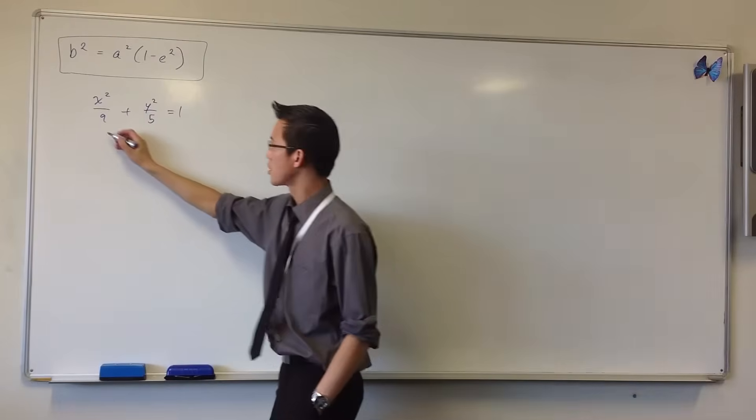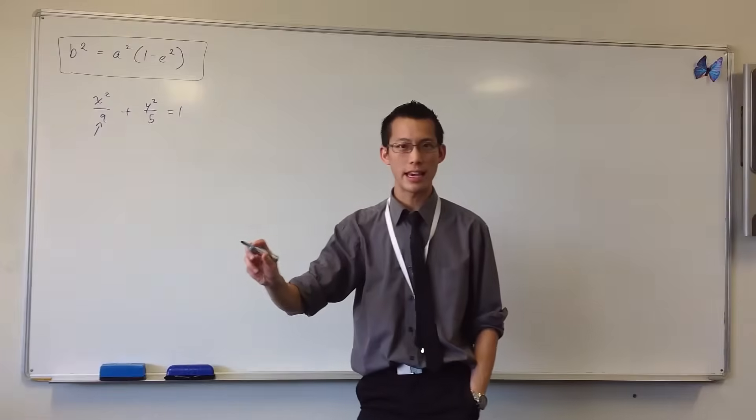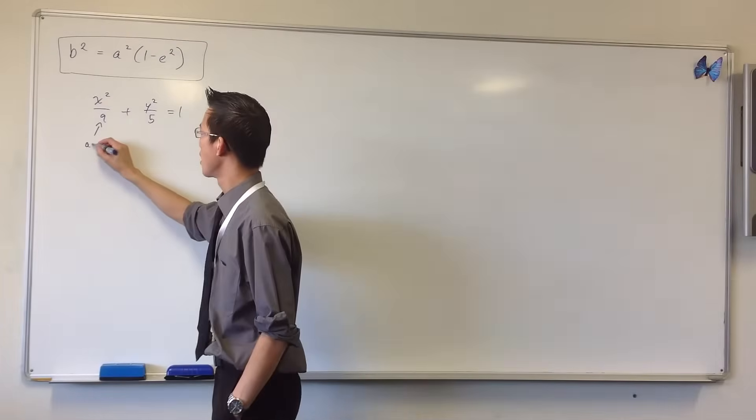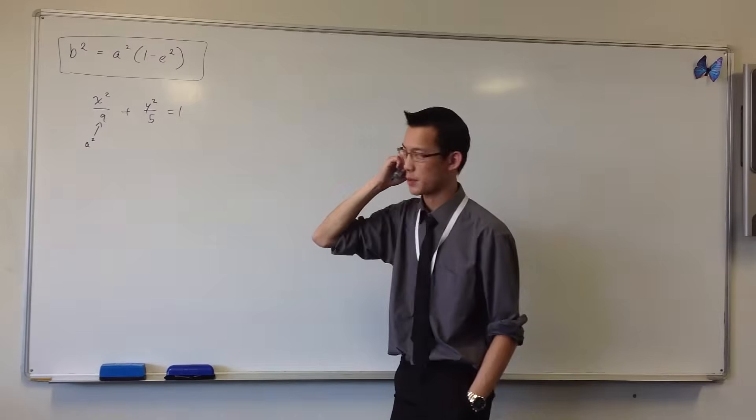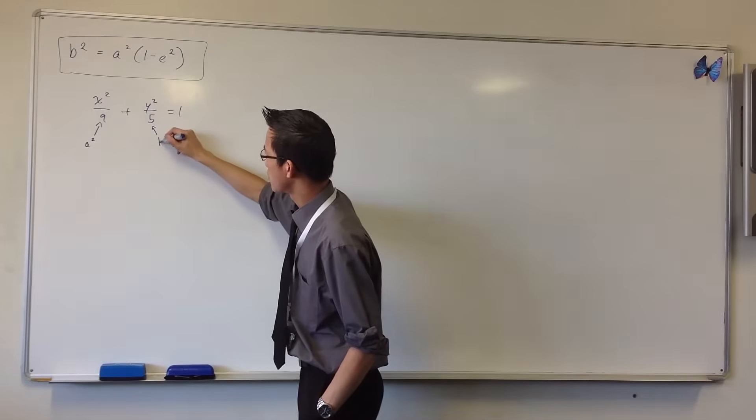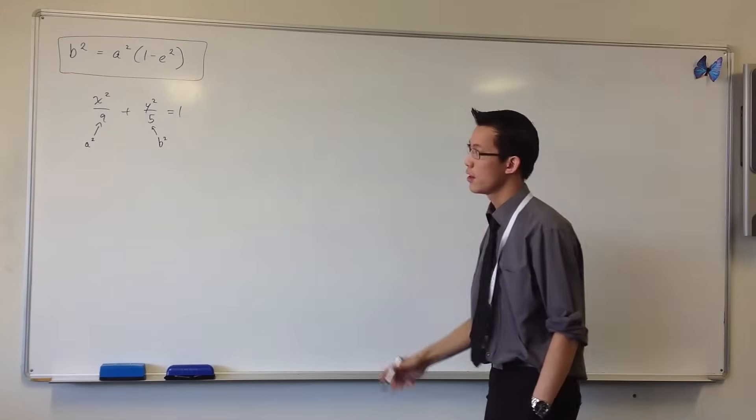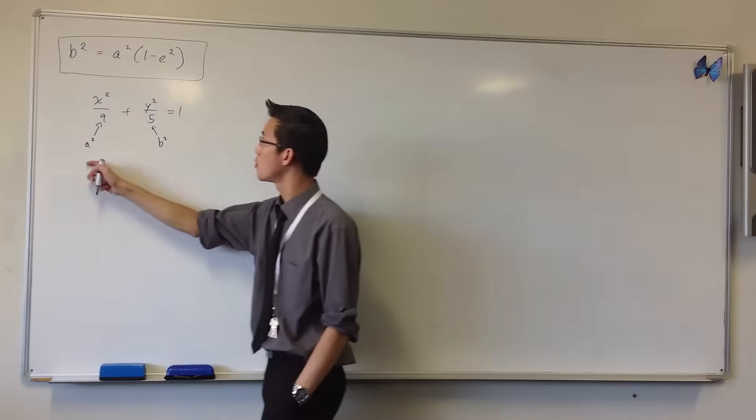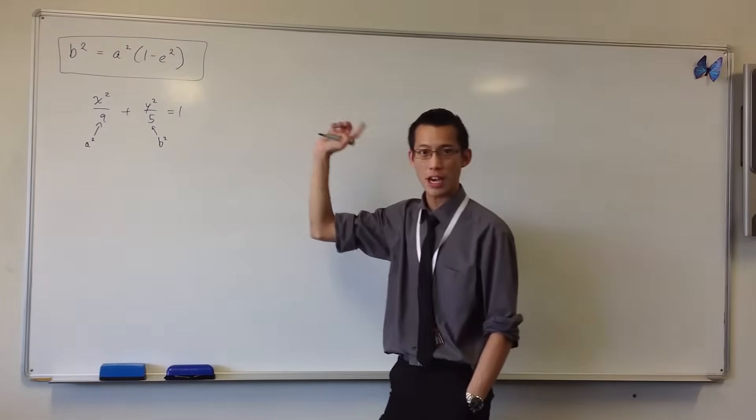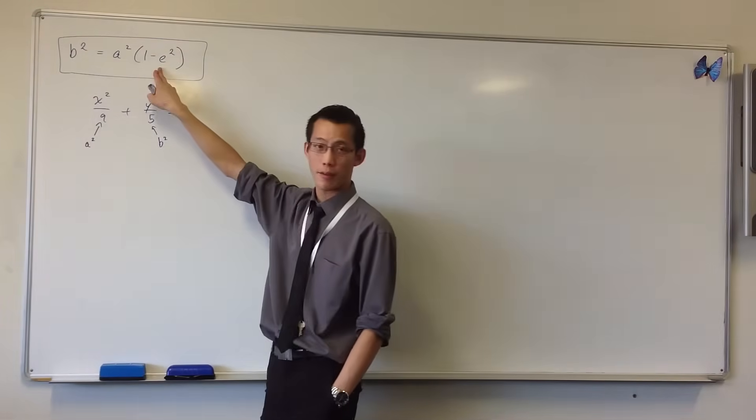You can see this is the larger length here, so this is going to be the semi-major axis squared. This is going to be the semi-minor axis squared. So now we have these two pieces which are going to fit into here, which as you can see, once you solve this you'll have a value for e.